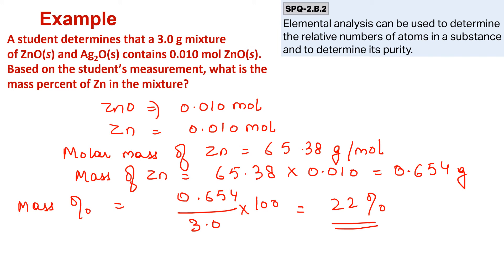So if we are given a question where we need to find the mass percent of a compound, we can find it directly. If we need to find the mass percent of an element, we can also do it by applying some additional calculations. Elemental analysis and the composition of a mixture can both be found using the same formula.